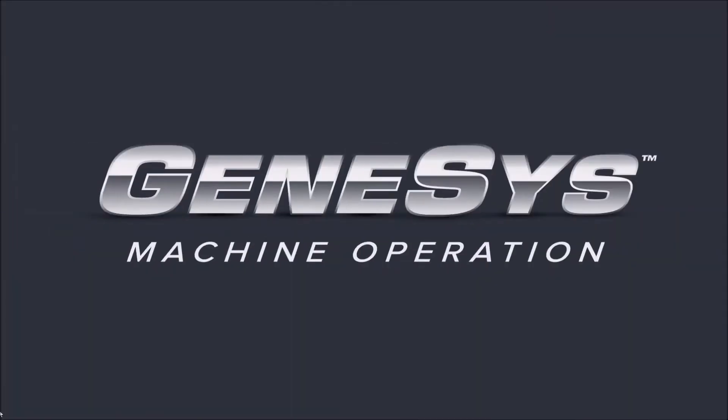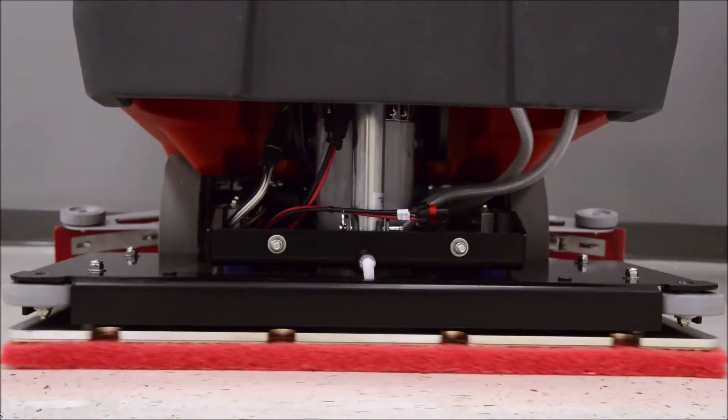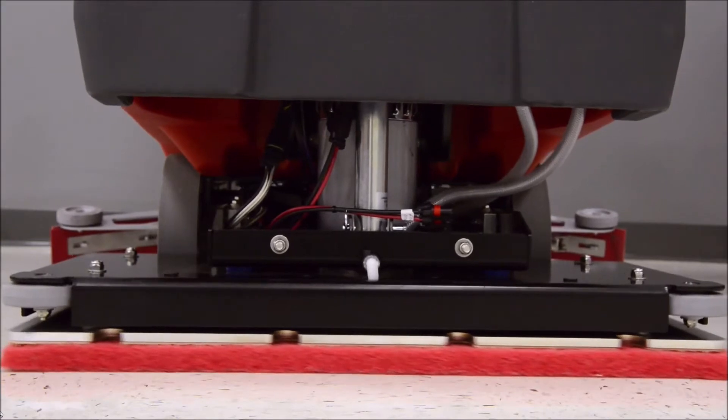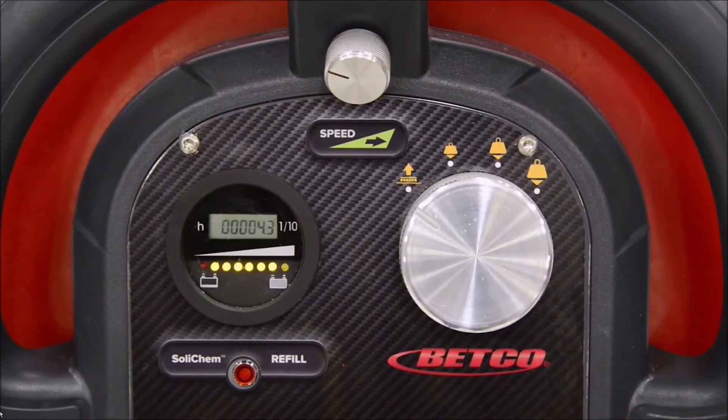Now that the machine is prepped and ready, let's move to section 2 and learn how to operate the Genesis for daily cleaning and project work applications. This first portion of the machine operation section will be split into two parts based on the control type of your machine.